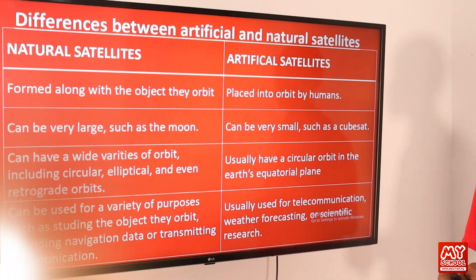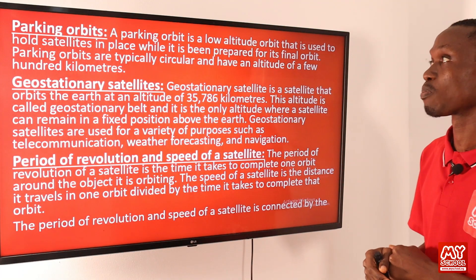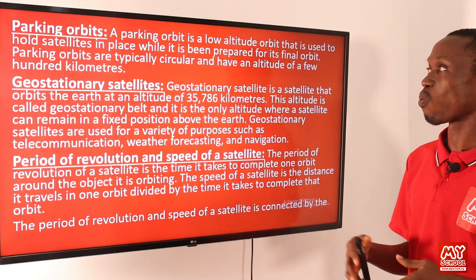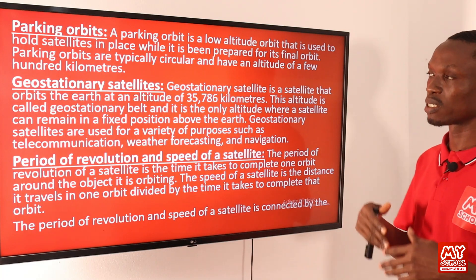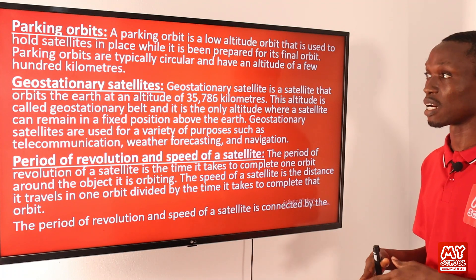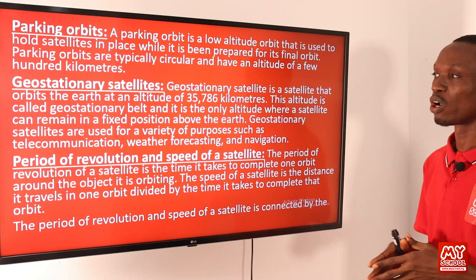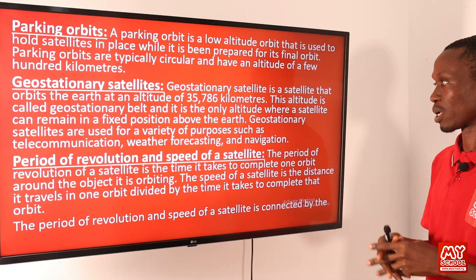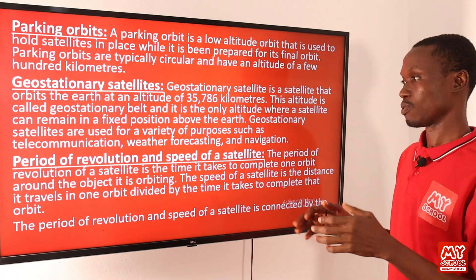Now we will define some terms associated with satellites. A parking orbit is a low-altitude orbit used to hold satellites in place while being prepared for their final orbit. Parking orbits are typically circular and have an altitude of a few hundred kilometers. A geostationary satellite orbits the Earth at an altitude of 35,786 kilometers — this altitude is called the geostationary belt, and it is the only altitude where a satellite can remain in a fixed position above the Earth. Geostationary satellites are used for telecommunication, weather forecasting, and navigation.